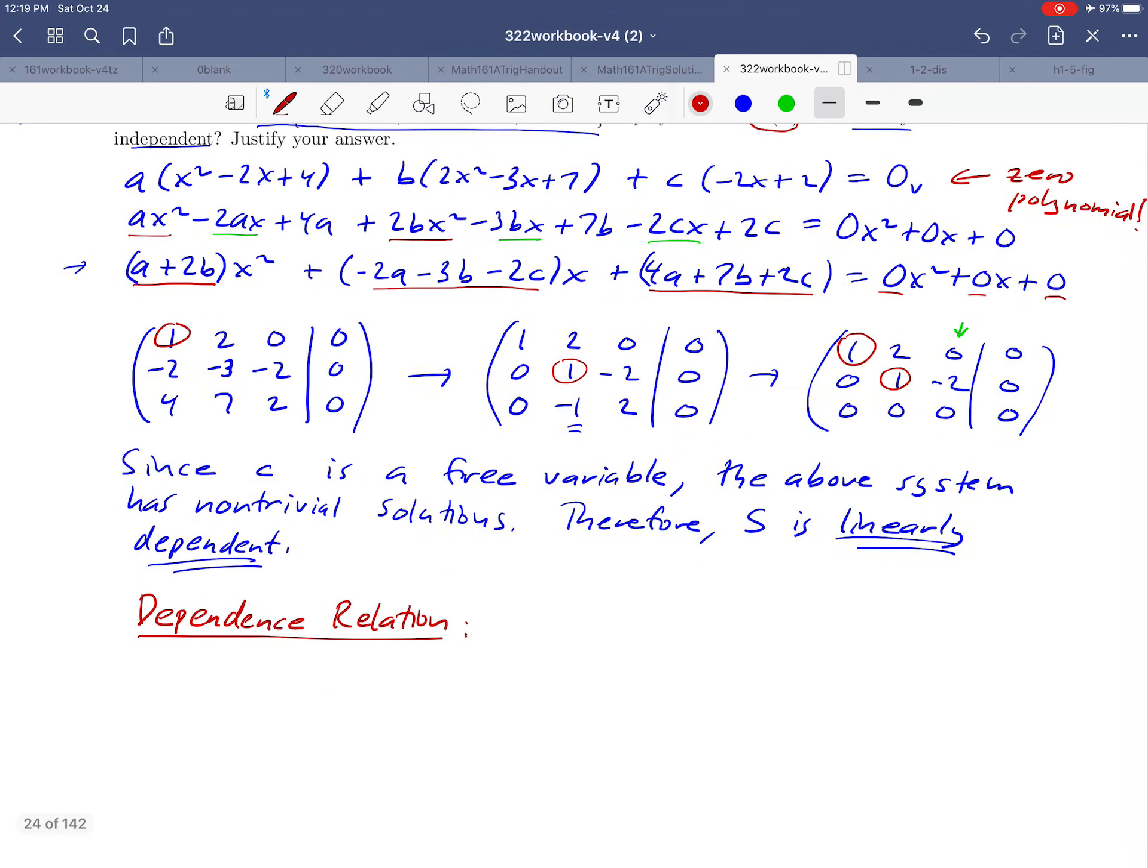And what we can do to find a dependence relation is just to start with our free variable. We know that c can be anything, so let's choose a non-zero value for that. So we'll let c equal one. And then go back to our system. And it's most helpful probably to look at the echelon form of this. So starting with the second equation here, that would, if we wrote it out, it would look like b minus 2c equals zero. We can take that and solve it for b. So b is equal to 2c, which is going to be two because we chose the value of one for c.